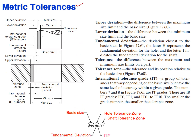The other standard is the metric tolerance standard. To cover the basic terminologies, we have this diagram and different definitions. First is the upper deviation — the difference between the maximum size limit and the basic size, for both shaft and hole. The lower deviation is the difference between the minimum size limit and the basic size. The fundamental deviation is the deviation closest to the basic size.